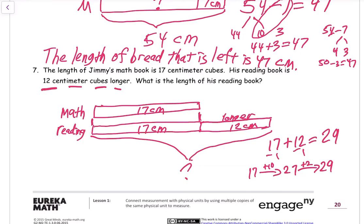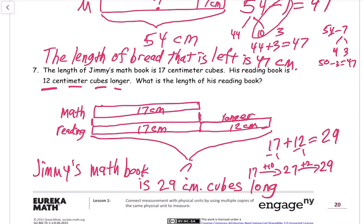And we need an answer sentence. Jimmy's math book is 29. What's our unit? Centimeter cubes, right? So centimeter cubes long.